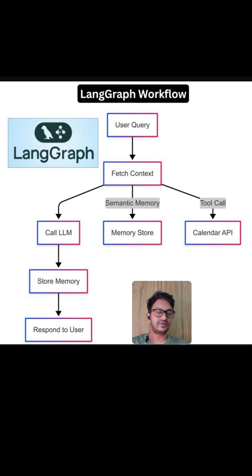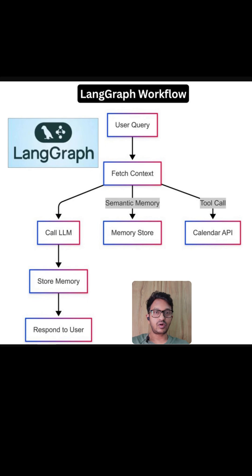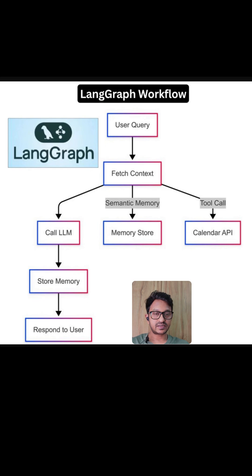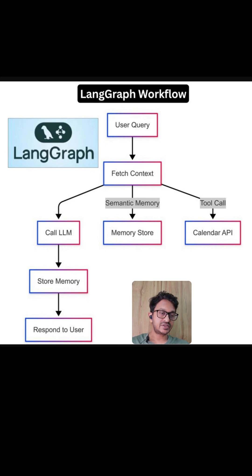As you can see in the image, here is a simplified workflow of an email agent that uses context engineering, built with LangGraph. It all starts with receiving a user query — the user asks, 'Hey, draft an email to John about tomorrow's meeting.' Then it fetches the contact context.